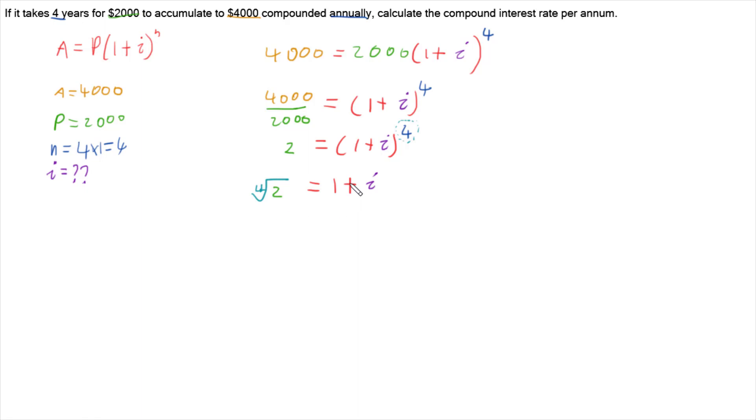And so now all I've got to do is just subtract 1 off. So little i is going to be this 4th root of 2 minus 1. And we just go and chuck that into our calculator. And that gives us a little i of 0.1892.